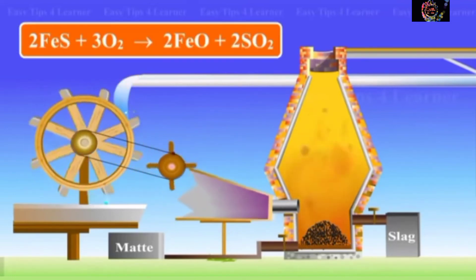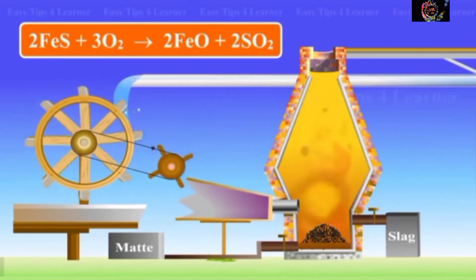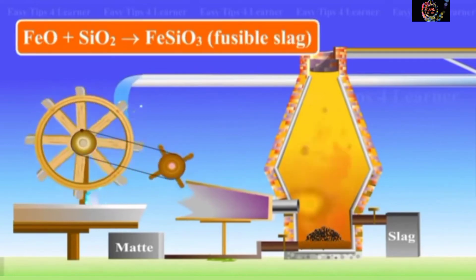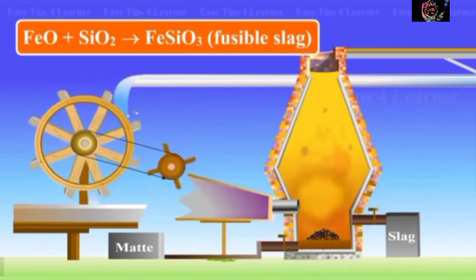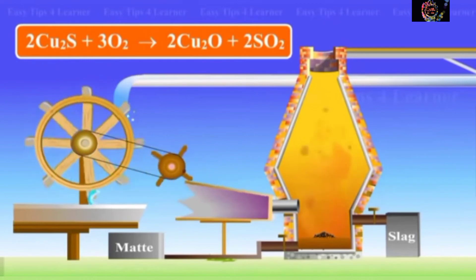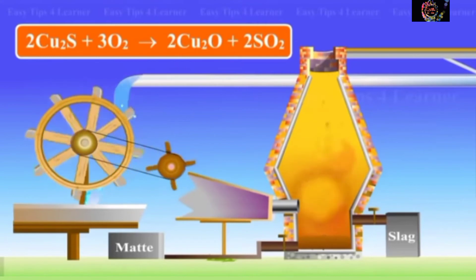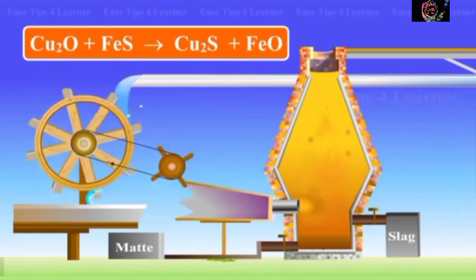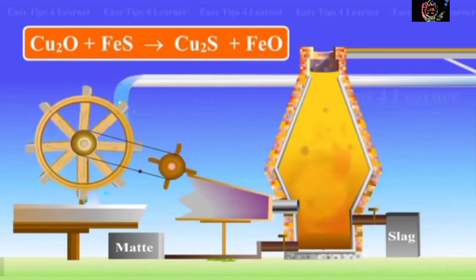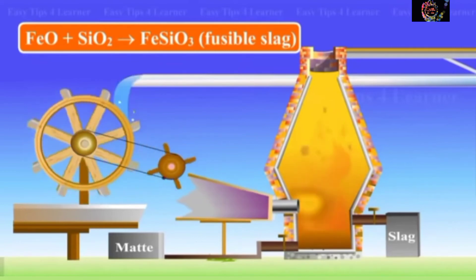Iron sulfide plus oxygen gives iron(II) oxide plus sulfur dioxide. Iron oxide plus silicon dioxide gives ferrous silicate, which is a fusible slag. Copper glance plus oxygen gives cuprite plus sulfur dioxide. Cuprite plus iron sulfide gives copper glance plus iron oxide. Iron oxide plus silicon dioxide gives ferrous silicate, a fusible slag.